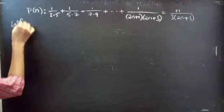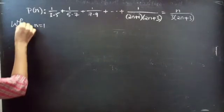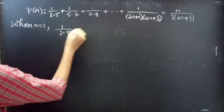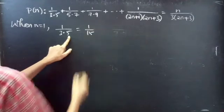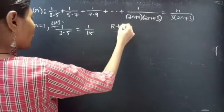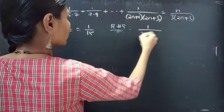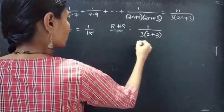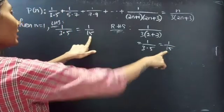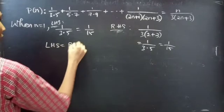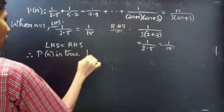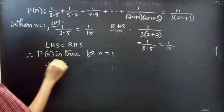When n equals to 1, take the first term: 1 by 3 into 5 equals 1 by 15. So from LHS you got 1 by 15. Coming to RHS, when you put n equals to 1, you will get 1 by 3 into (2×1+3) equals 1 by 3 into 5, which is 1 by 15. So LHS equals RHS, and from this we can say that P(n) is true for n equals to 1, that is P(1) is true.